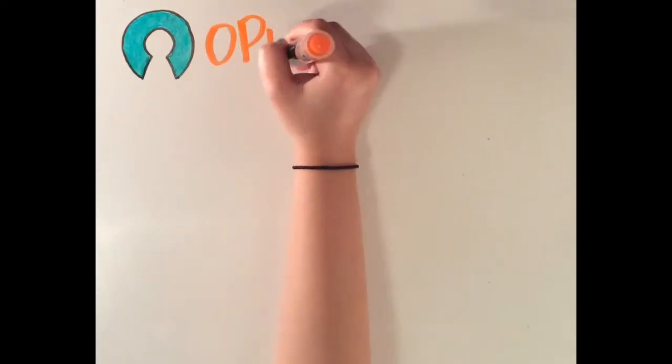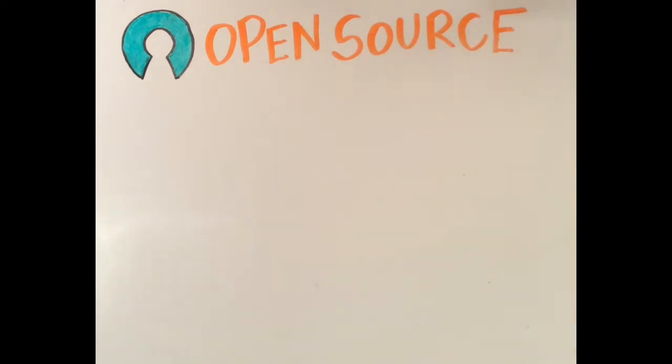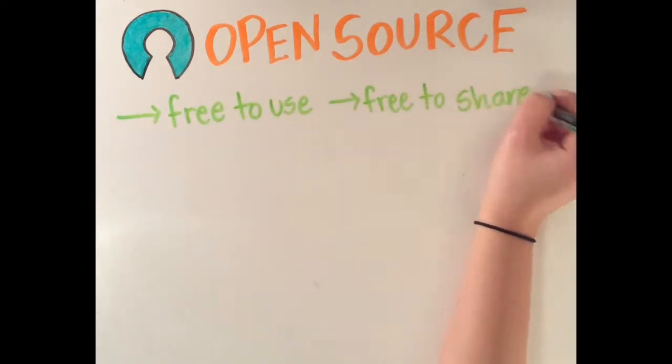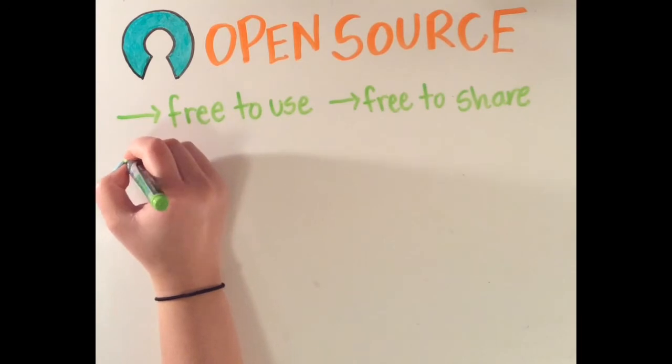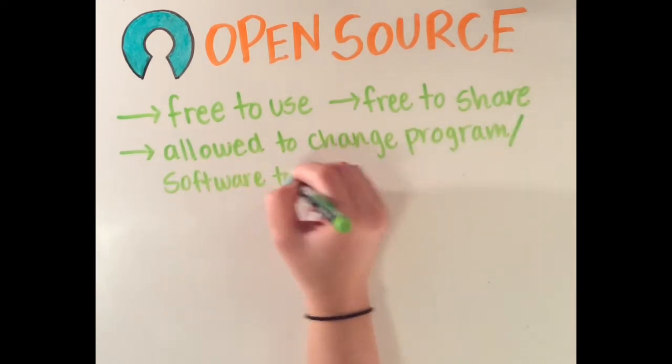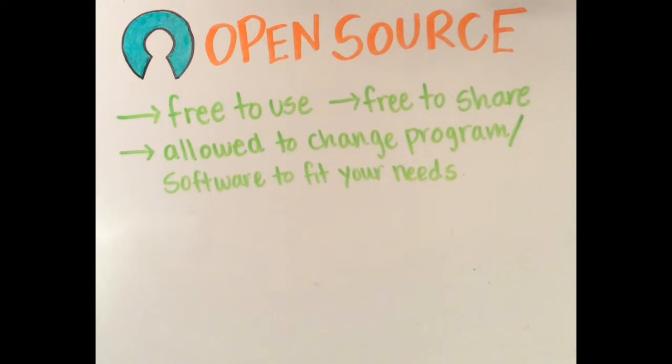This led to the creation of open source softwares - technologies that are free to use and whose published data can be distributed freely between users. Open source technology also allows people who are extra technology savvy to be able to change the source code, or the structure, of the programs to make the programs suit the specific needs they might have.